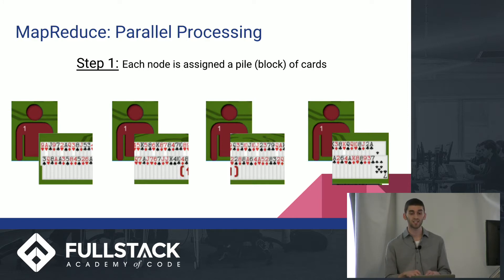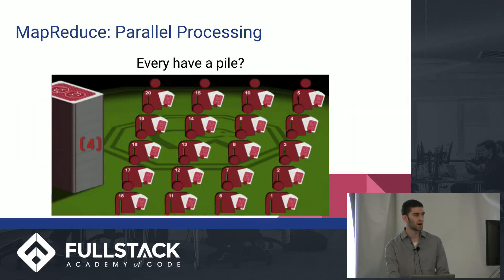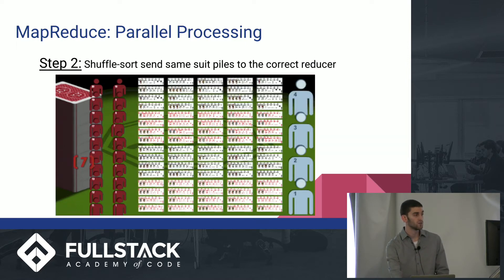So what we're going to do is number one, each node is assigned, let's say, a deck of cards. All right. And each node is going to separate them into its own suit. Not going to count anything. Just go and separate them into suits. All right. So every node's got a pile. And it's going to separate them into each of four suits. Now, at this point, we need to do a shuffle.